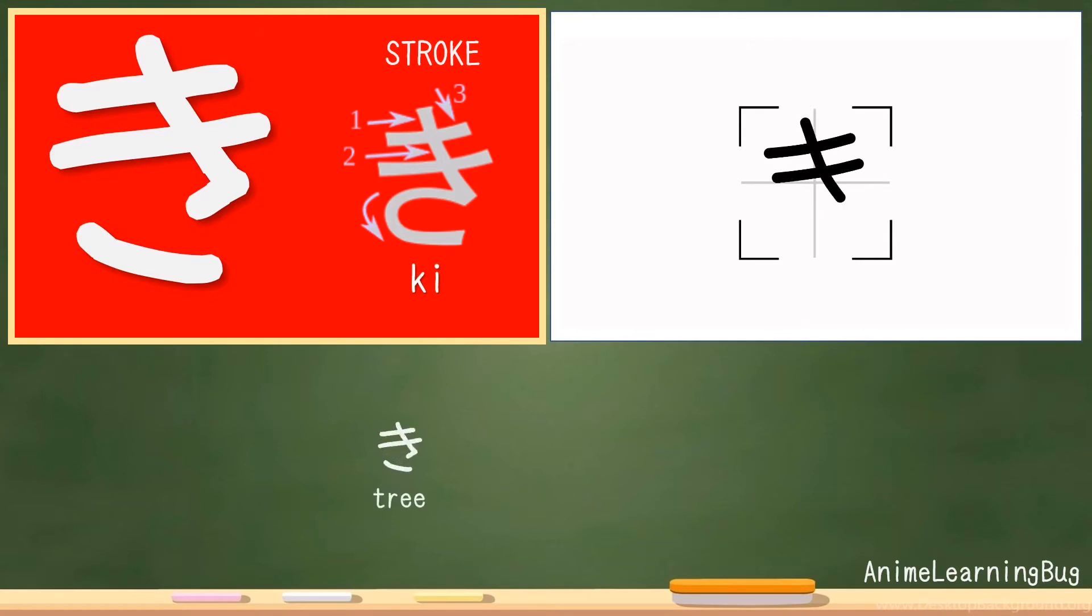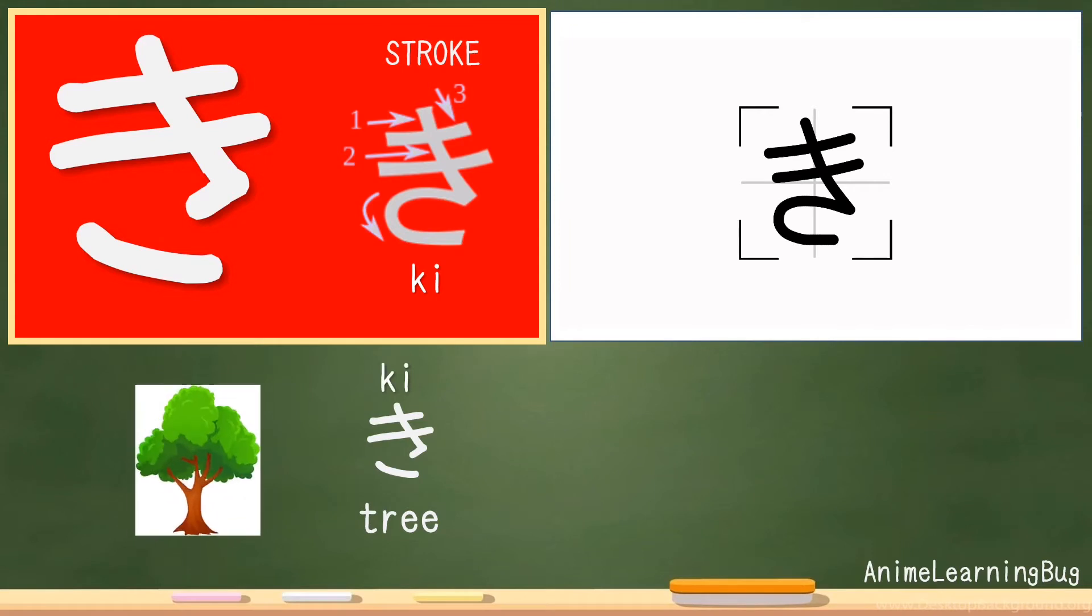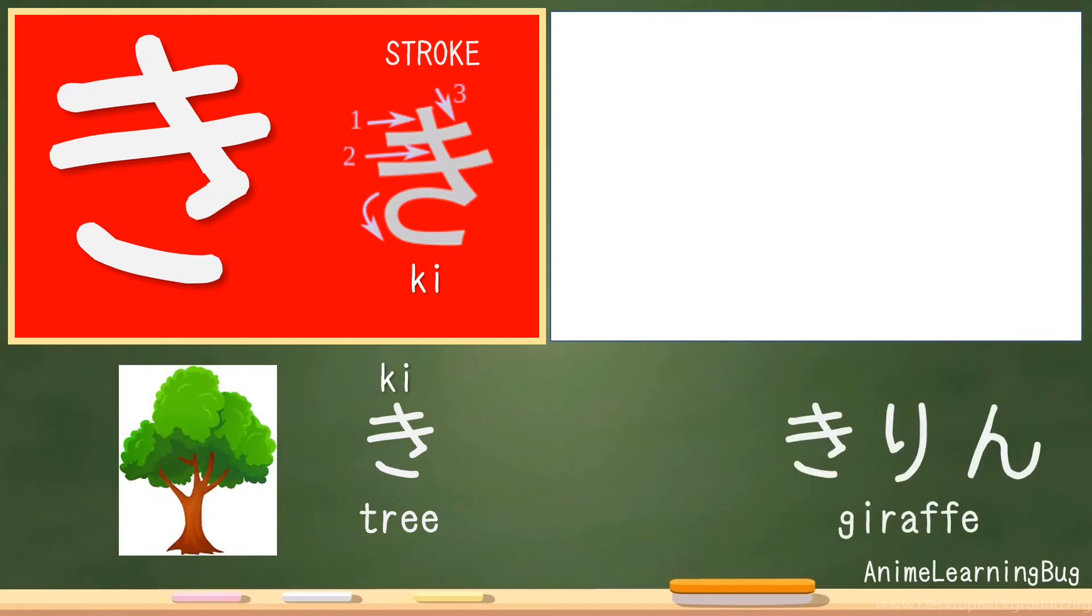For example, we have here Ki, or tree, and kirin, which means giraffe.